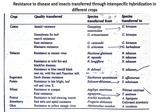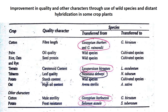For quality improvement: in cotton for fiber length from Gossypium thurberi and raimondii to hirsutum; in palm for oil quality from wild to cultivated species; in rice and oats for seed protein from wild to cultivated; in tomato for carotenoid content from Lycopersicon hirsutum to esculentum; in tobacco for leaf quality from Nicotiana debneyi; in potato for starch from wild to cultivated; in oats for high oil content from Avena sterilis to sativa; in cotton for male sterility from Gossypium harknessii to hirsutum; in potato for frost resistance from Solanum acaule/tuberosum.